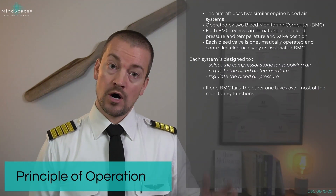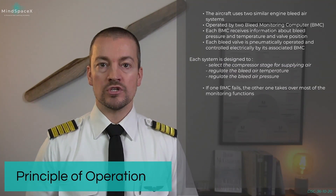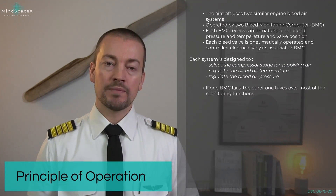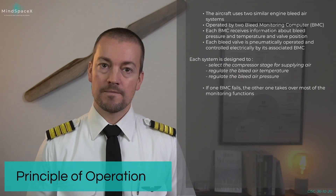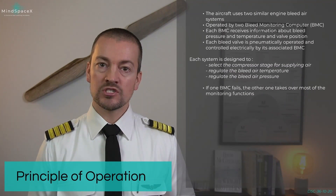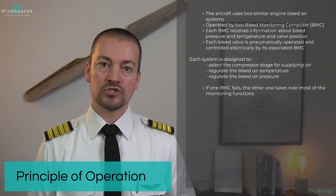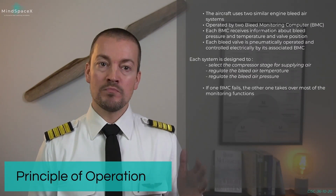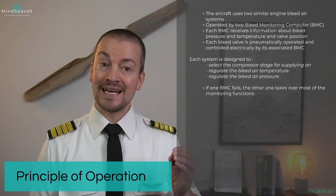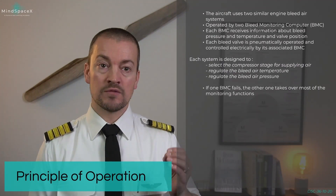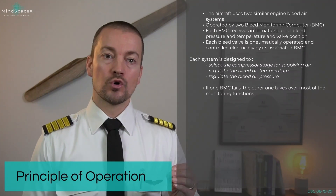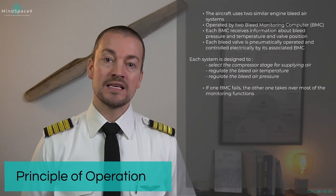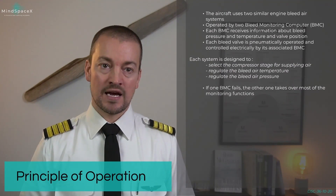Let's start with normal operation. The aircraft uses two similar engine bleed systems, operated by two bleed monitoring computers. Each BMC receives information about duct pressure and temperature and valve positions within the system. Each bleed valve is pneumatically operated and controlled electrically by its associated BMC. BMC number one controls bleed valve number one on the left side, and BMC number two supplies and controls the bleed valve on the right side from engine number two.